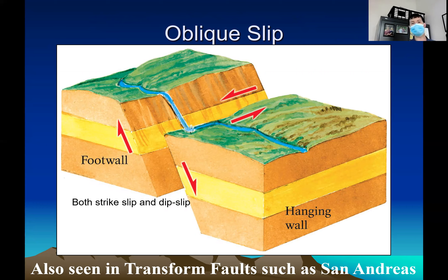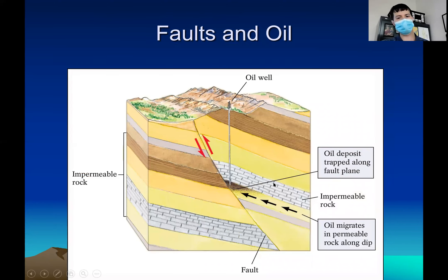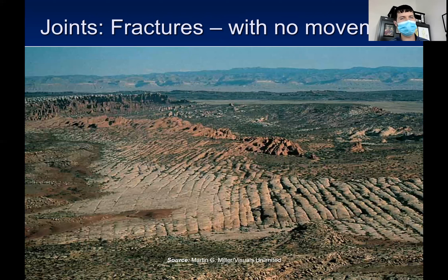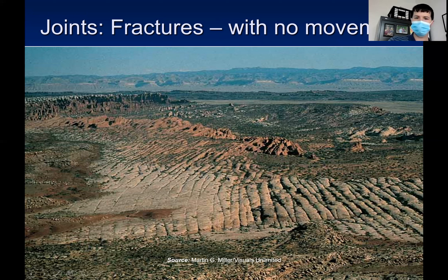A lot of these things can happen all at the same time — so this is a strike-slip and also a normal fault, so it's going down and to the right. The earth can move in lots of weird ways. The last type is a joint fracture, which I'm not going to quiz you guys on — a joint fracture is where the ground is fractured but there's no apparent movement. You can see cracks going north and south and east and west, so there's lots of movement but no single direction.